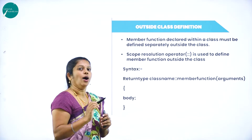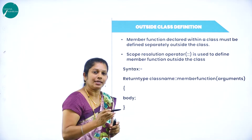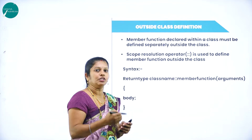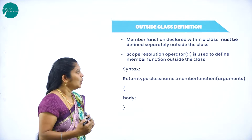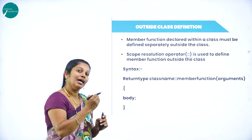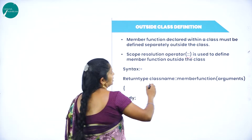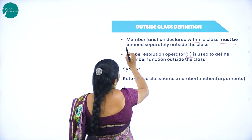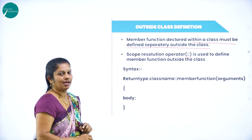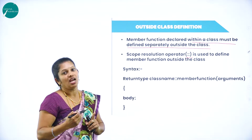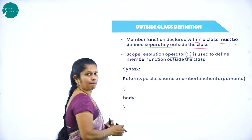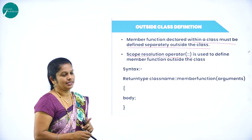Next, we will discuss about outside class definition. Outside class definition means all the statements of the functions are written outside the class with the help of the scope resolution operator. The member function declaration within the class must be defined separately outside the class.